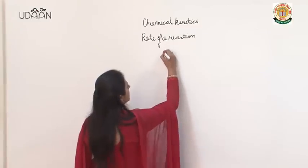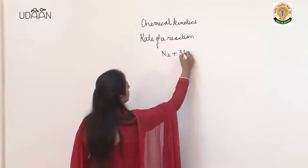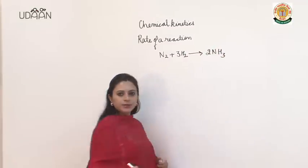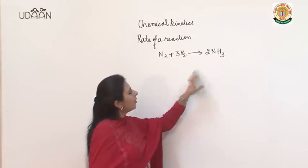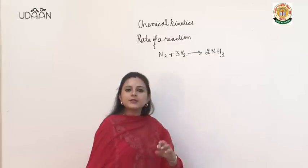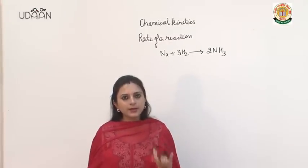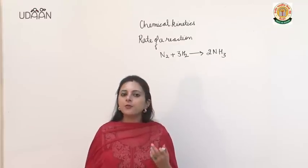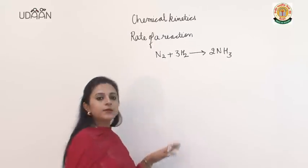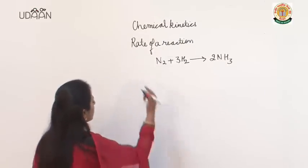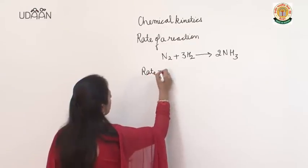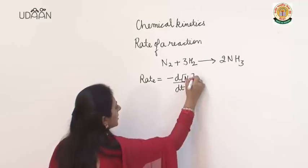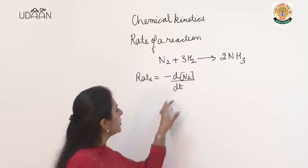Now if we have to write the rate of reaction for this reaction, how do we express it? If we look at this reaction, nitrogen and hydrogen are our reactants and ammonia is the product. When the reaction starts, initially the concentration of reactants is more and as the reaction proceeds, the concentration of products increases. If we express the rate of reaction in terms of reactants, rate is equal to minus d/dt of N₂ — that is the change in concentration of nitrogen per unit time.